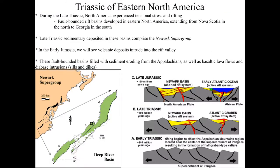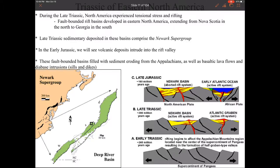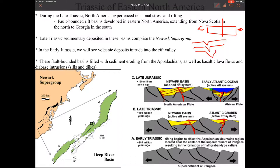During the beginning part of the Triassic, we have rifting — North America is rifting away from Africa. When things rift and pull apart, they're going to break, but they don't break straight downwards. Essentially, we're going to see a rift valley develop, and that rift valley is going to get deeper and deeper over time, which is what we see here.